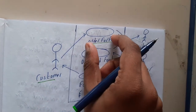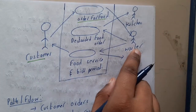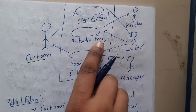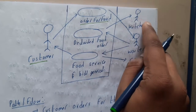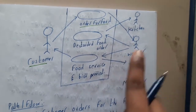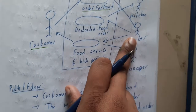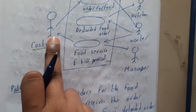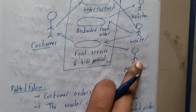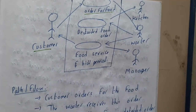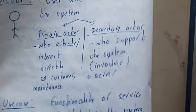The customer places a food order, which goes to the waiter. The waiter collects the order and delivers it to the kitchen module. Once the food is ready, the waiter collects it and performs food service for the customer. The manager is then informed about the bill, generates it, and delivers it to the customer — you simply draw this flow.